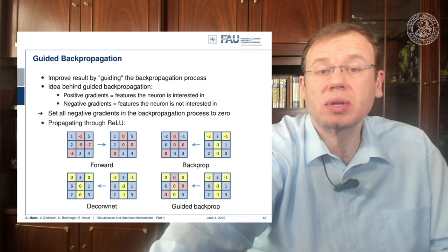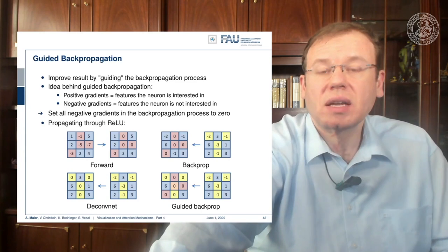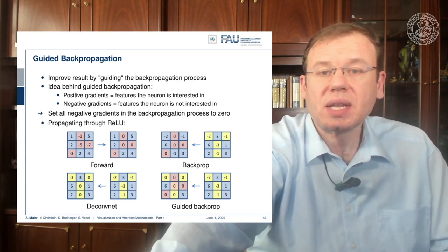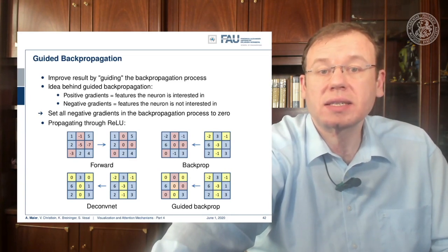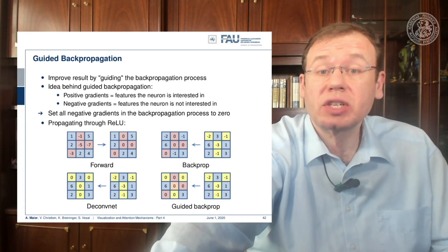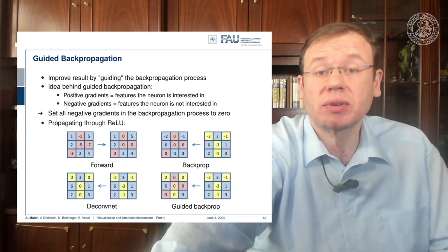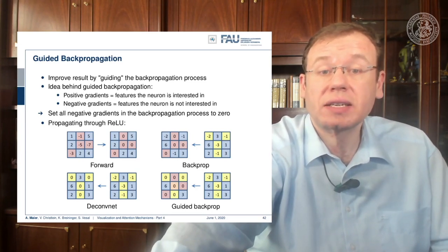If you have input activations, in the forward pass through the ReLU you simply cancel out all negative values and set them to zero. In typical back propagation, you remember which entries in the forward pass were negative and set those values again to zero, but you keep everything that came from the sensitivity of the previous layer. Note that negative entries from the sensitivity are shown in yellow.